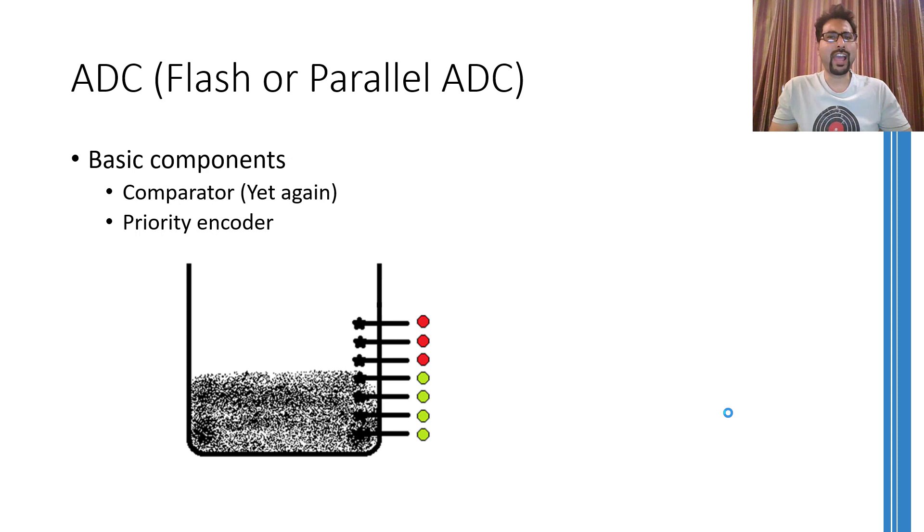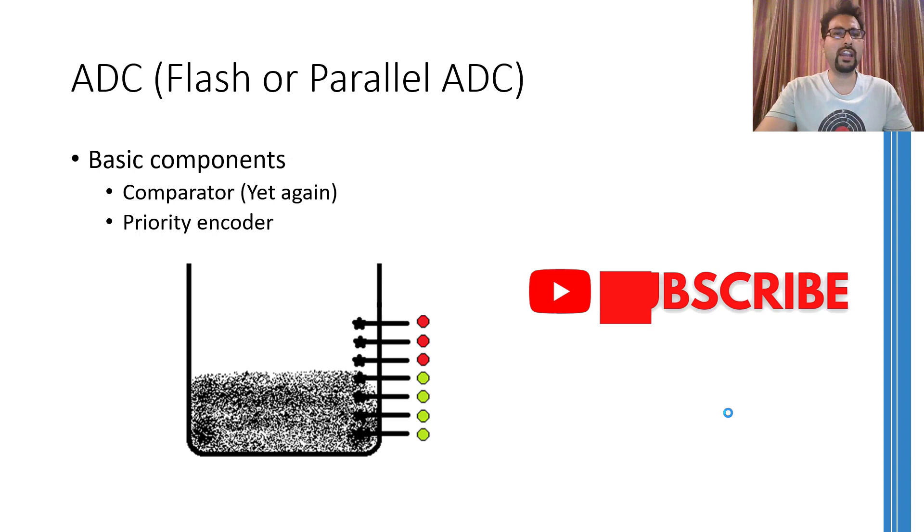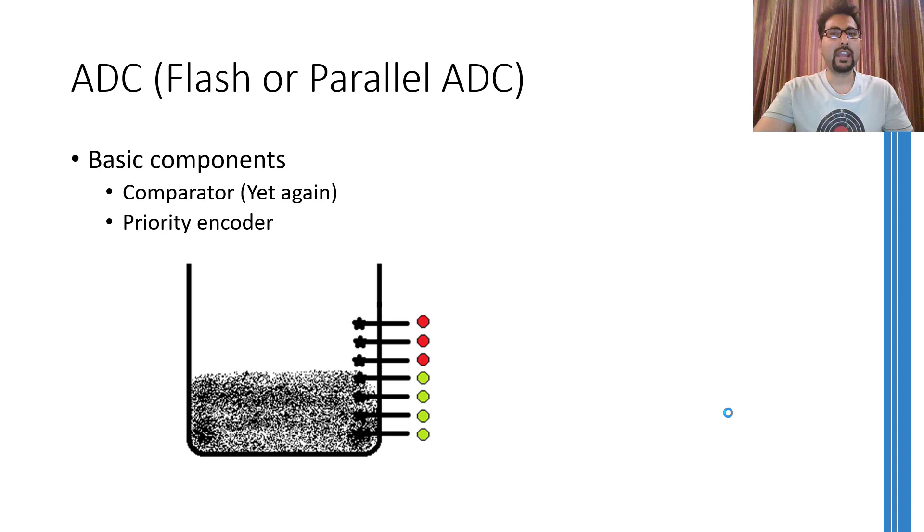The working of a flash ADC can be compared with a level sensor that uses multiple sensors inside a container. For example, if the water level or the liquid level in the container is this much as shown in the figure, then the lower 4 sensors will be showing an output, whereas the upper 3 sensors will show no output. By using the outputs of the lower 4 sensors, you can easily figure out the level in the beaker.